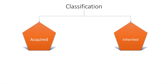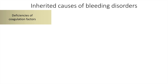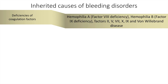We will now move on to the inherited causes of bleeding disorders. These include deficiency of coagulation factors such as hemophilia A, B, and deficiency of factors 2, 5, 7, 9, and 11, and von Willebrand's disease.